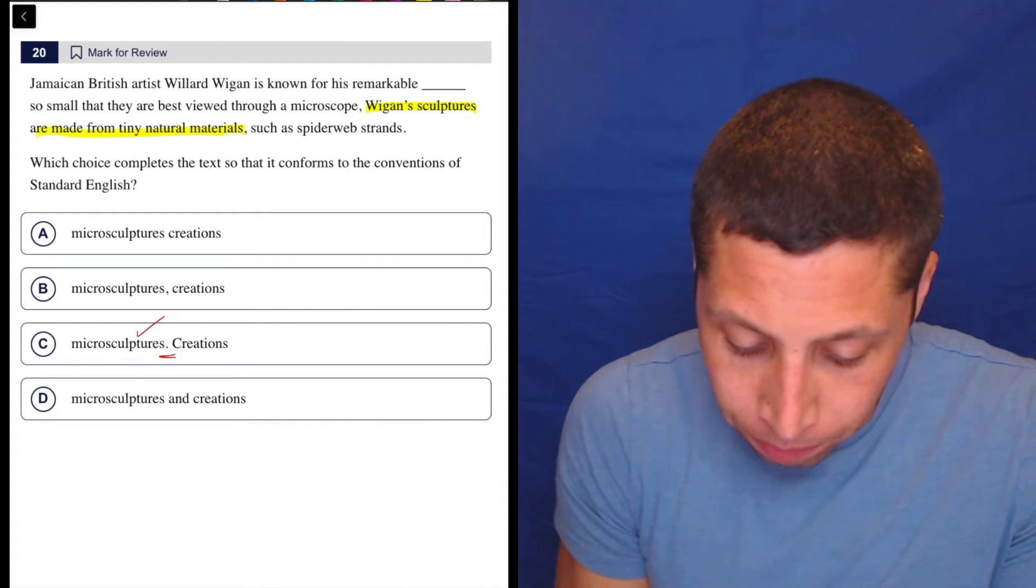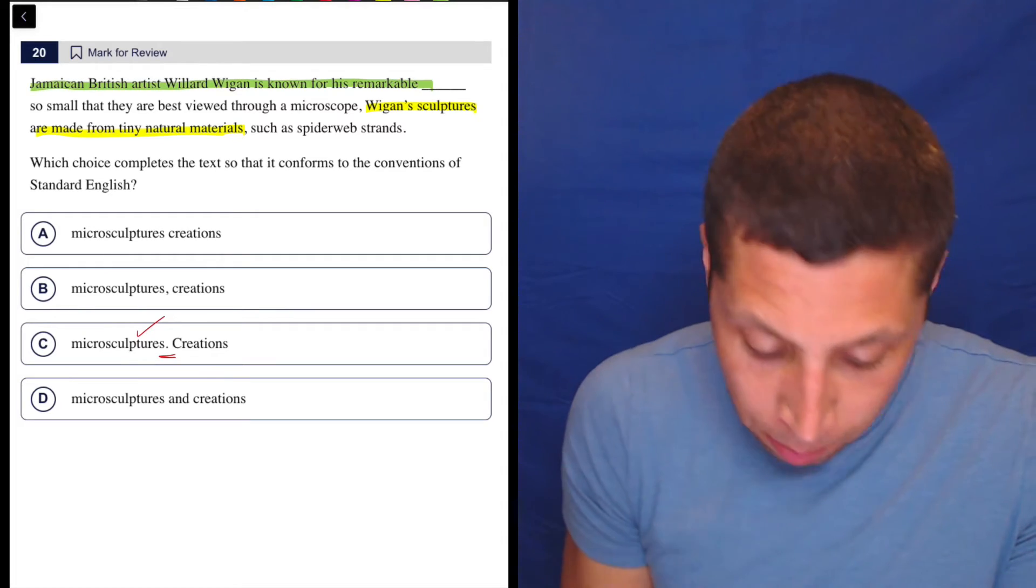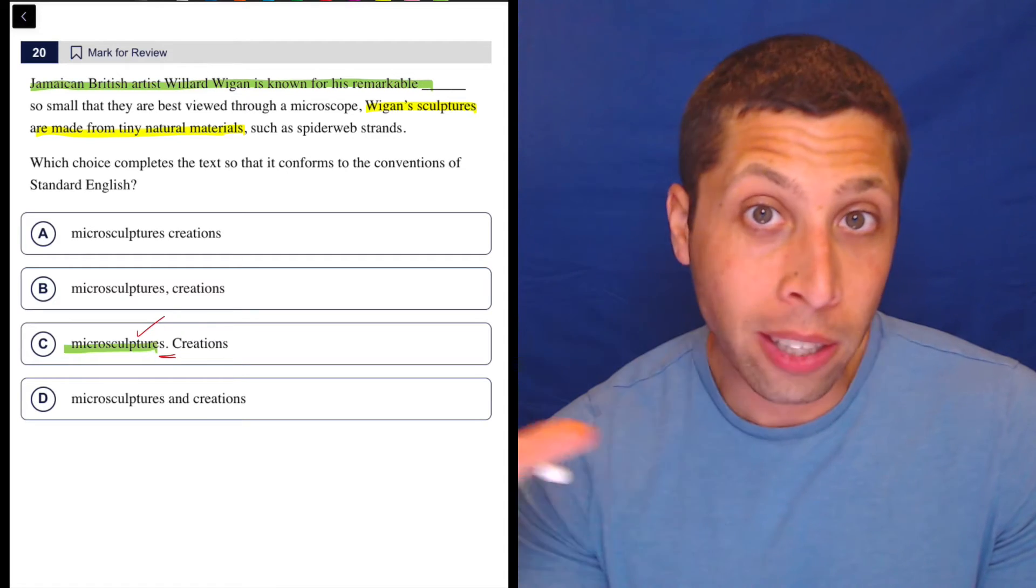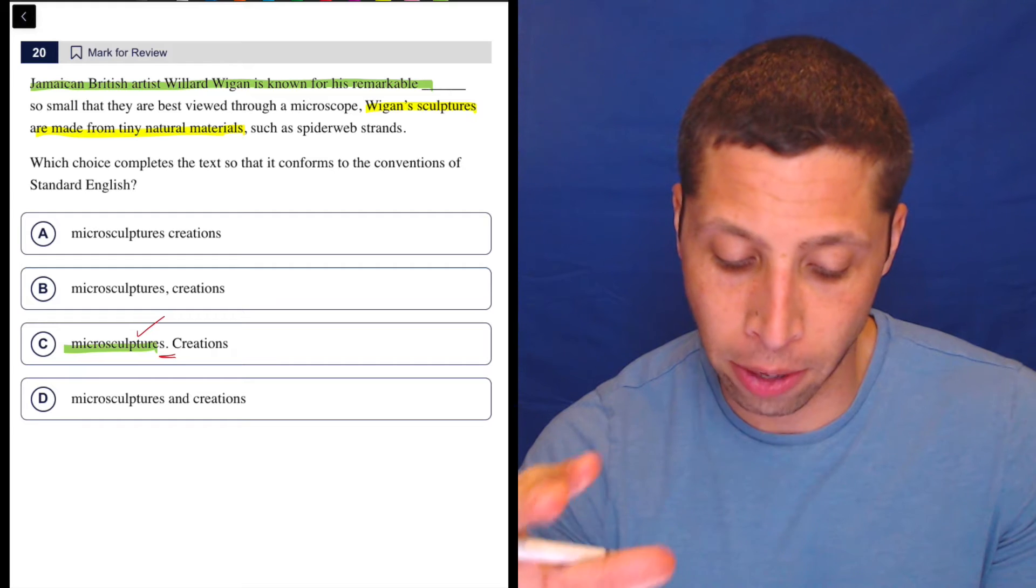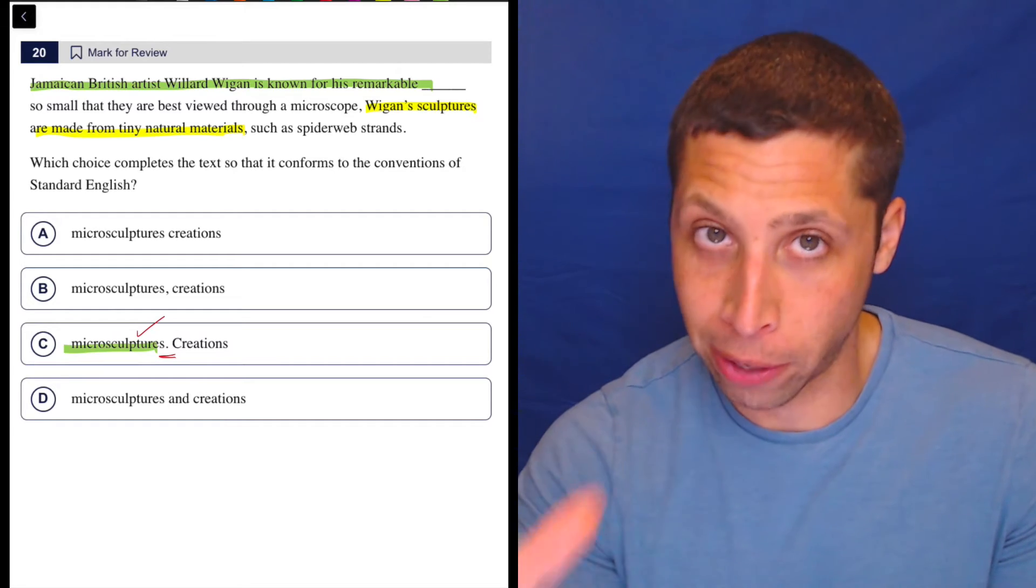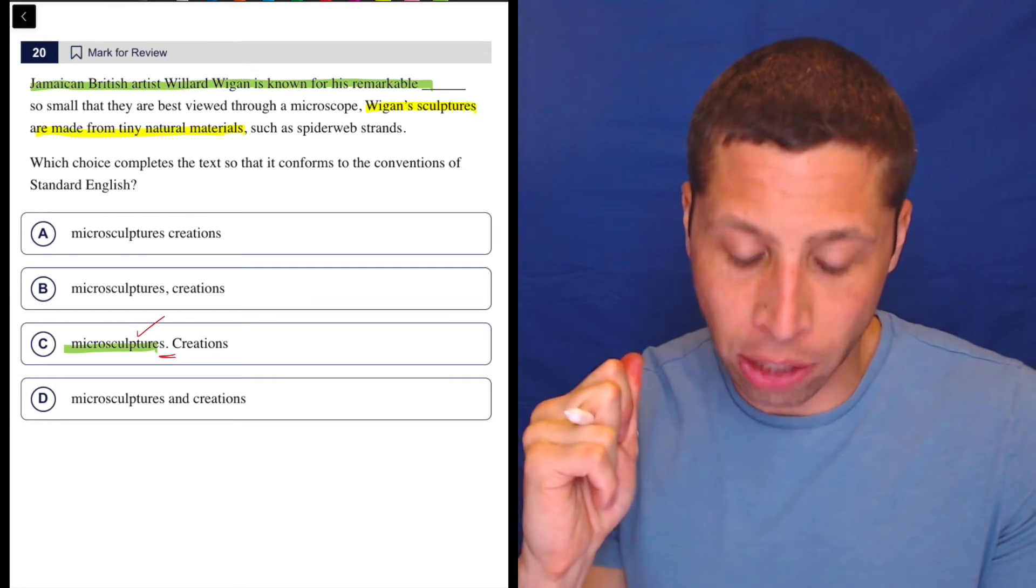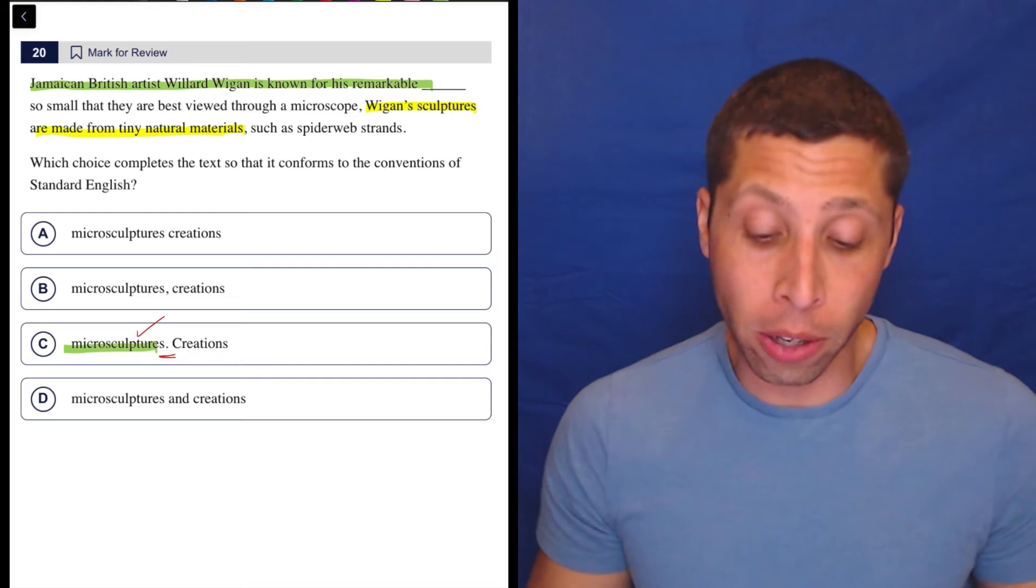The sentence here is in yellow. And then let's use the sentence we did before is basically up to micro sculptures. So regardless of anything else, regardless of all the other clauses, we have two complete sentences that could stand on their own. Jamaican British artist Willard Wiggin is known for his remarkable micro sculptures. Stop. Wiggin sculptures are made from tiny natural materials. Stop. We need two stops. We need two hard stops.